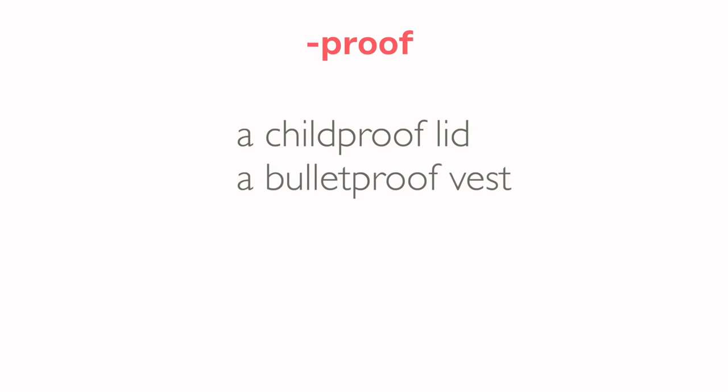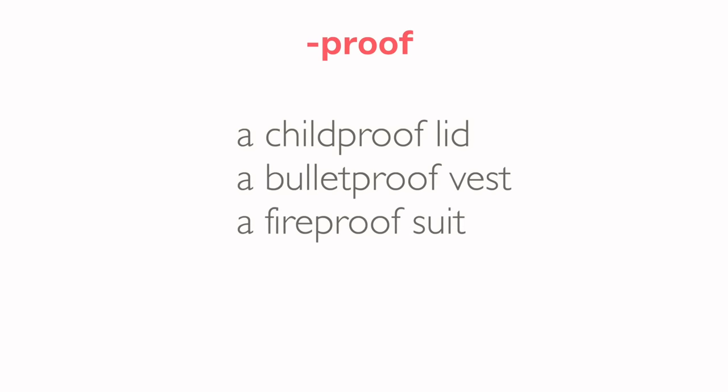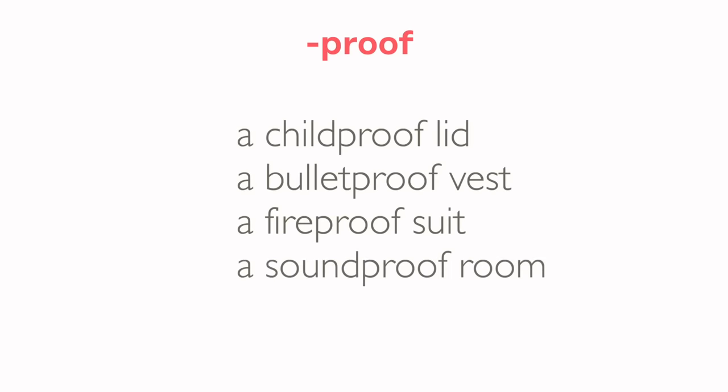You could have a child-proof drawer. Otros ejemplos: bala en inglés — bullet. Y un chaleco a prueba de balas — a bullet-proof vest. ¿Qué más cosas tenemos a prueba de algo? Un traje de bombero, a prueba de fuego — a fireproof suit. Algo que nos encantaría tener: una habitación insonorizada — a soundproof room. That's one of my dreams.